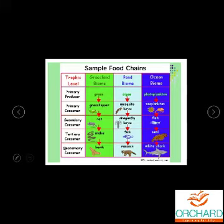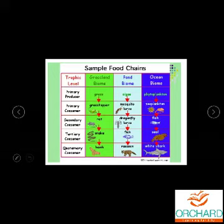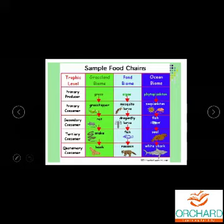In the grassland biome food chain: grass is eaten by the grasshopper, the grasshopper is eaten by the rat, the rat is eaten by the snake, and the snake is eaten by the hawk. This sequence is called a food chain, and together these food chains make up the ecosystem. In the pond biome: algae is eaten by mosquito larvae, then dragonfly larvae, then fish, then raccoon. In the ocean biome: phytoplankton, zooplankton, fish, seal, white shark — these are all sample food chains.